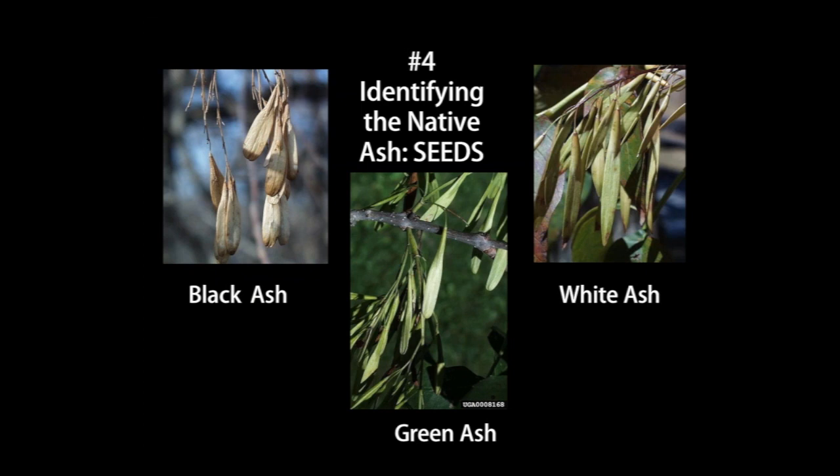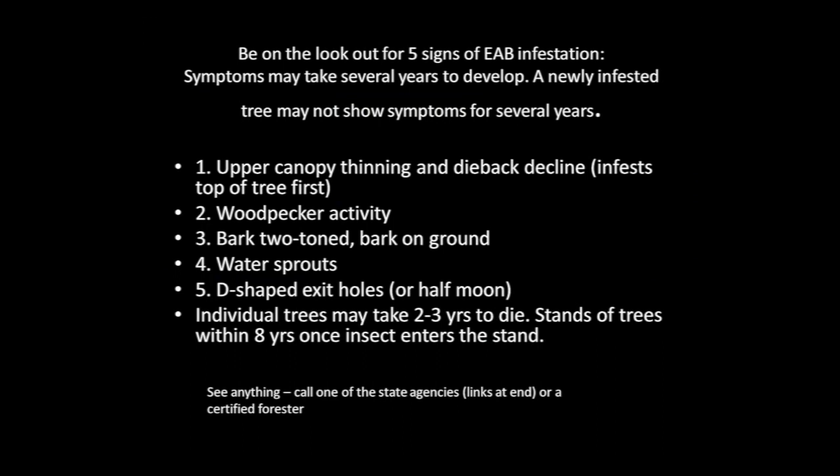That's it for ash tree identification. Now we're on to the signs of an EAB infestation. It takes about two to three years before you might see any outward signs, so your tree could have already been attacked but you don't quite see the signs yet. The changes will be subtle at first — a few dead branches at the top of the canopy and some woodpecker activity. You may not notice the early signs.